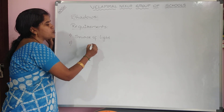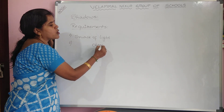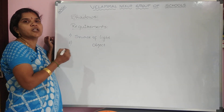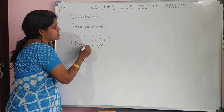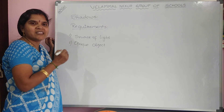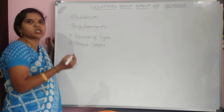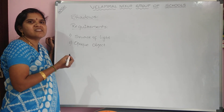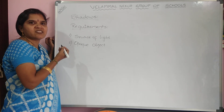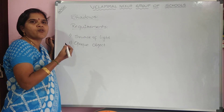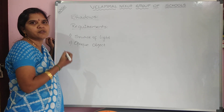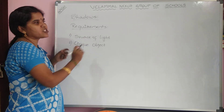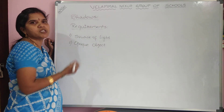Second, there should be an object to get the shadow — and this is very important — it should be an opaque object. Do this activity at home children: take a torch or cell phone torch, use an opaque object like a pencil or eraser, and take a screen like a wall. Allow the light to fall on the object — it forms a shadow. From this activity we conclude: we require a source of light and an opaque object.